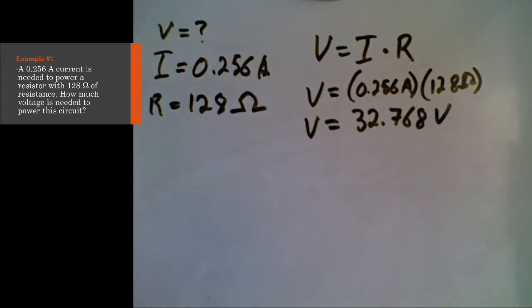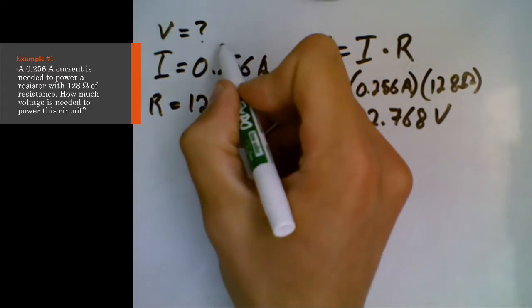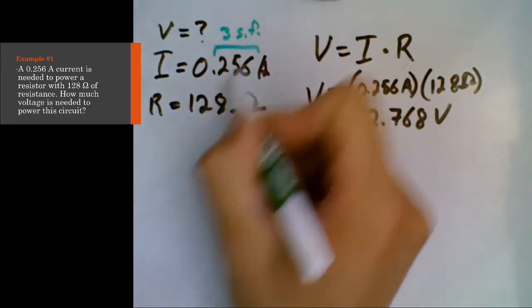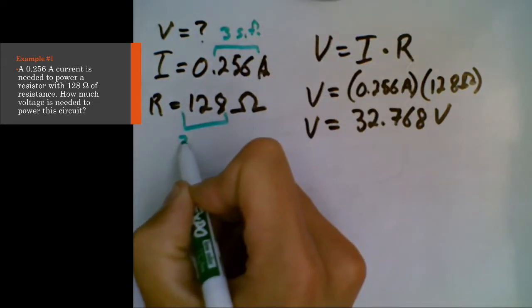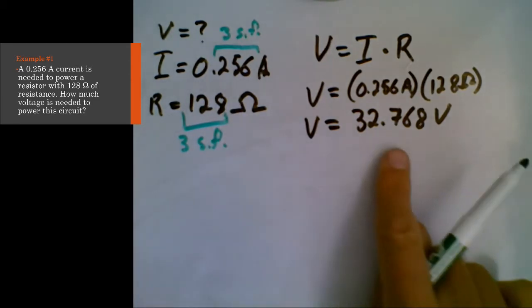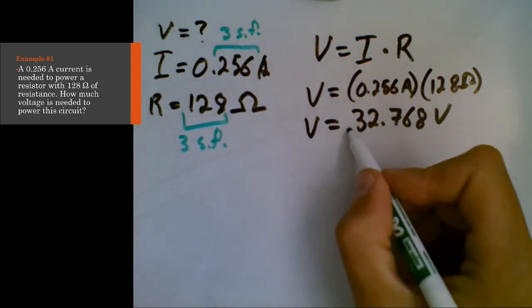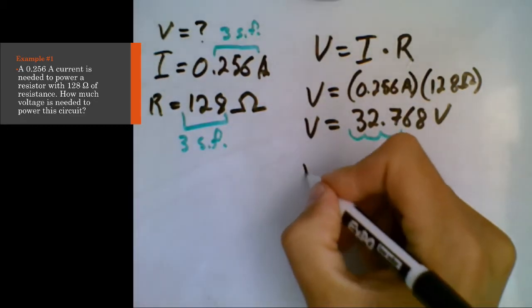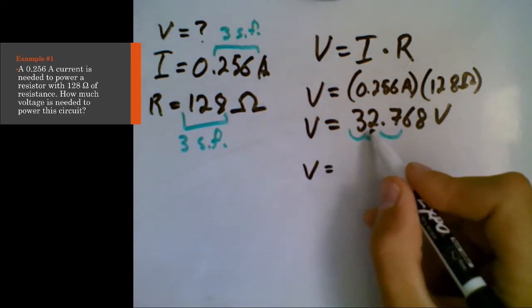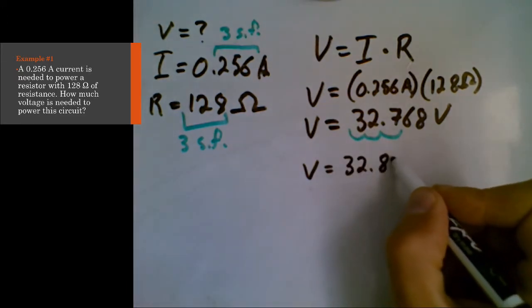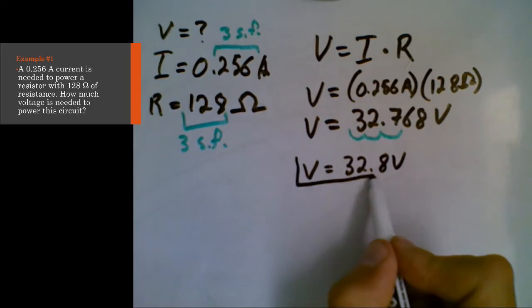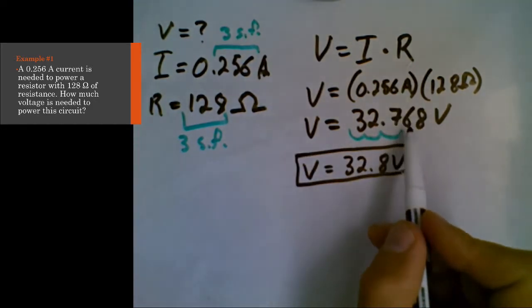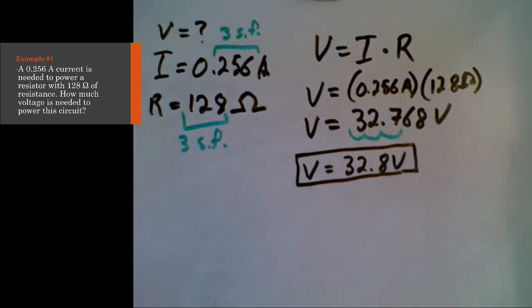The other thing we need to keep in mind here is significant figures. This number for current has three significant figures, whereas 128 has three significant figures. That means our final answer also needs to keep three significant figures. So our final answer here is going to be 32.8 volts with three significant figures, rounding up because of the digit behind our last significant figure.